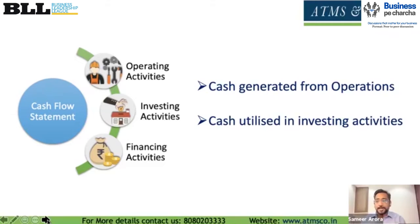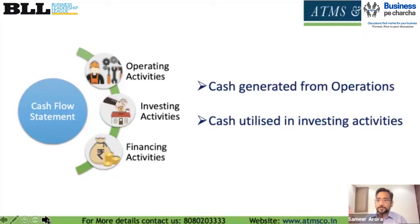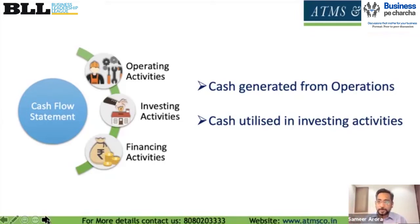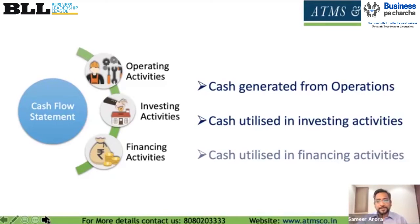Investing activities include buying fixed assets like machinery, office space, software, or computers. If we can't identify those opportunities right now, the money may go into investments like bonds or other instruments — either business-related investments or ones that can be used for further purchases when they return. It also shows if you sold a property or an investment — those inflows appear here.